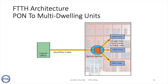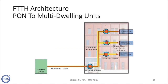In dense urban areas, most subscribers will probably be in multi-dwelling units — what the business calls MDUs — like apartments or condominiums. One of the common ways of handling them is to bring a cable to the building, put a splitter inside, and run a fiber to every unit in the building. If the MDU has a lot of residents and needs lots of fiber, you can use the cascaded coupler method: put the initial splitter in the basement of the building and then put a splitter on each hallway, so fiber only has to run from one end of the hallway to the other. This can be a very efficient way of dealing with multi-dwelling units.